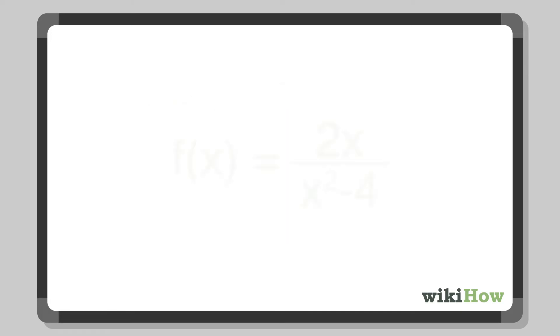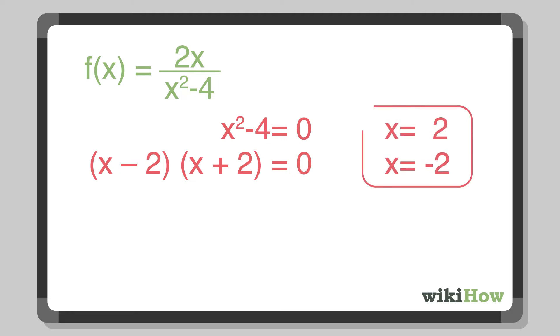To figure this out, set the denominator as an equation equal to 0 and solve for x. Let's say you have a function f equals 2x over x squared minus 4. Start by writing out x squared minus 4 equals 0. Factor the expression to get x minus 2 times x plus 2 equals 0. When you solve for 0, you'll get two possible inputs, 2 and negative 2.